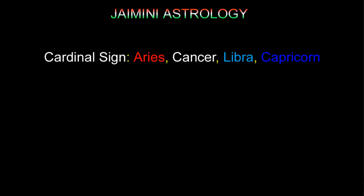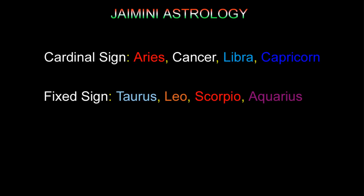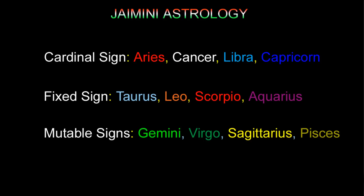The fixed signs are Taurus, Leo, Scorpio, and Aquarius. Fixed signs simply show stability and fixation — these are people who don't really like change too much. The mutable signs are Gemini, Virgo, Sagittarius, and Pisces. Never forget these three categories when working with Jaimini astrology.